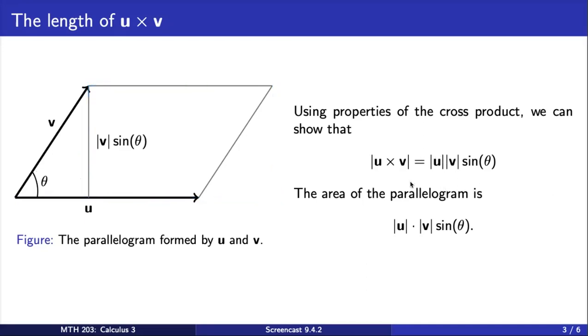The area of this rectangle is given by its width, which is this length here. This length here is the length of the vector v times sine theta, multiplied with the rectangle's length.